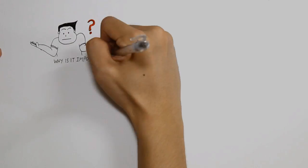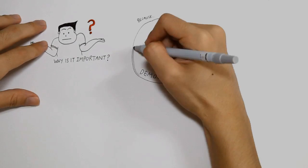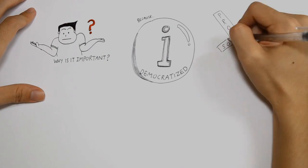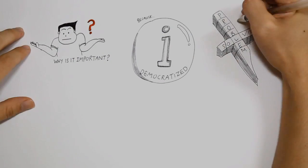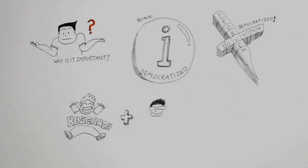And why is this important? It's because information becomes more and more democratized. Problem solving will become more and more democratized. And this would revolutionize research and learning.